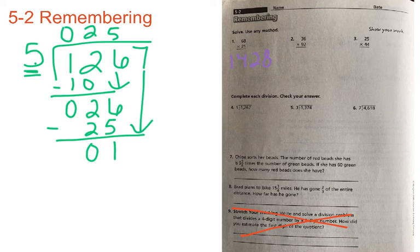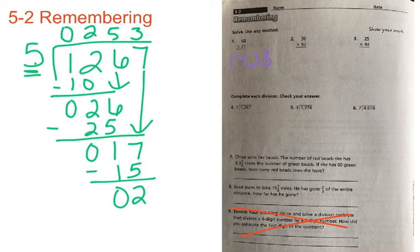So bring down your 7. And I know that 5 can go into 17, 3 times. 5 times 3 is equal to 15. And 7 minus 5 is equal to 2. And 1 minus 1 is equal to 0. So our answer is going to be 253 remainder 2.